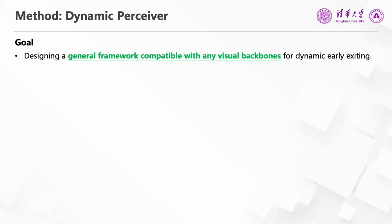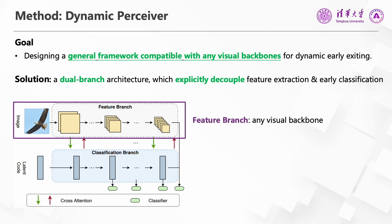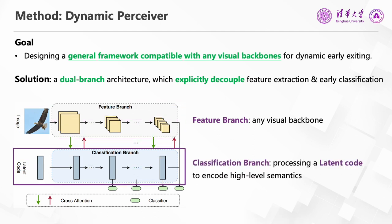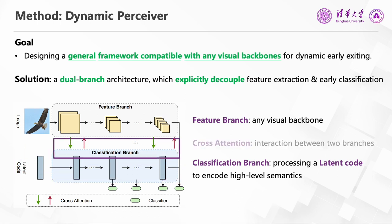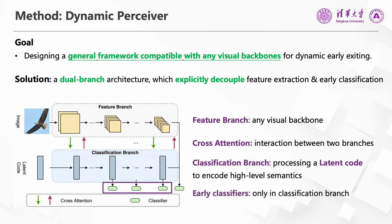To this end, our goal is designing a general framework for dynamic early exiting. This framework should be compatible with any visual backbones. Given that directly adding classifiers in a backbone is sub-optimal, our solution is the proposed Dynamic Perceiver, a two-branch architecture which explicitly decouples feature extraction and early classification. Specifically, the first branch is named the Feature Branch, which can be selected as any visual backbone. The second branch is named the Classification Branch, whose input is a latent code — a learnable token sequence specially used to encode high-level semantics. We build interaction between these two branches via cross-attention layers, and multiple early classifiers are appended in the Classification Branch. We will use an ablation study to show that such decoupling is suitable for dynamic early exiting.